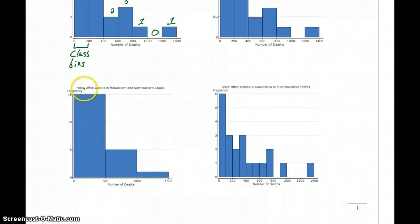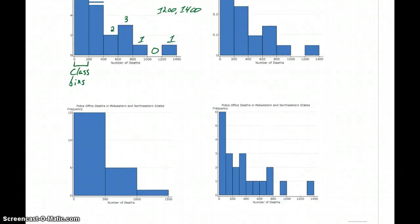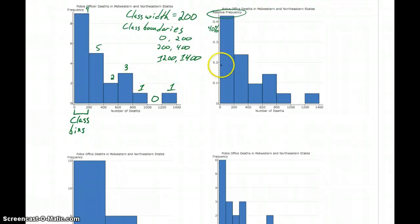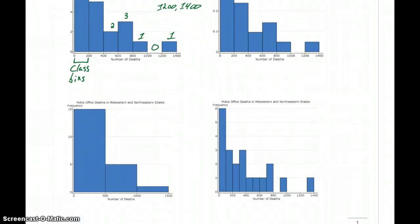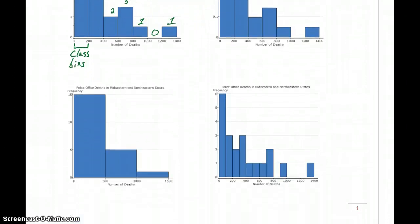In our last two graphs, we're still looking at police officer deaths in these two sets of states, but now we see two very different pictures, different from each other and different from either of these first two graphs. So even though these graphs are using the exact same information, we have some different frequencies, in this case a frequency of 15, 5, and that's probably 1 or 2, depending.